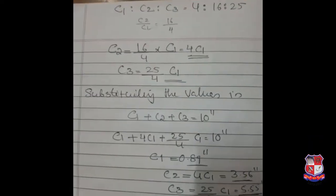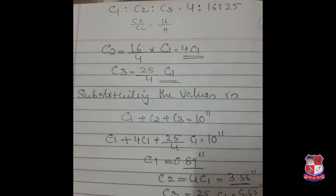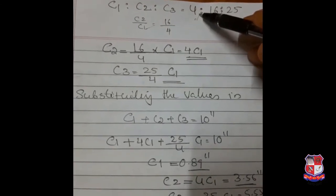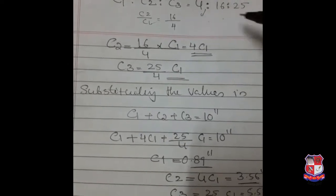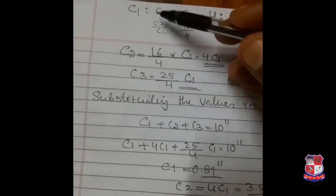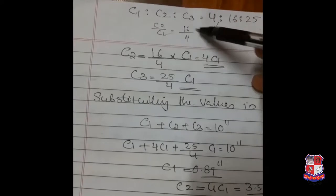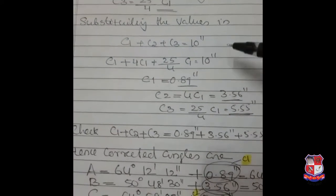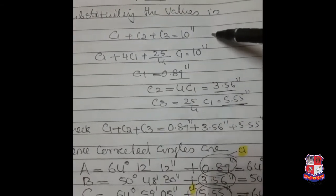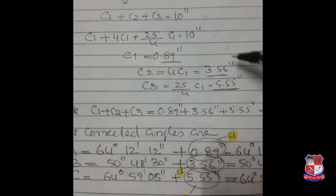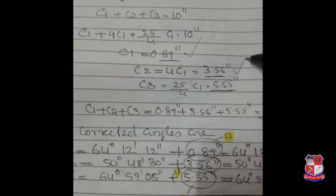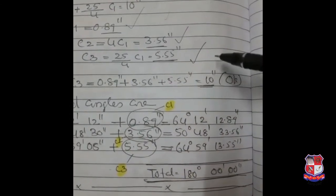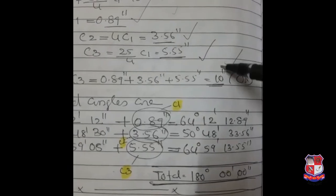Now we see the condition: C1 : C2 : C3, we know that is 4. Squaring that gives 4, 16, 25. Equate C1, C2, C3 and find them in terms of C1 — simple mathematical calculation. Then add them and find out the values of C1, C2, and C3. Check whether C1 + C2 + C3 is coming to 10 seconds.